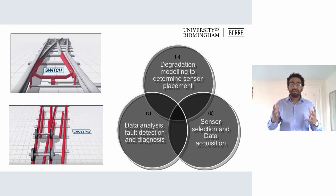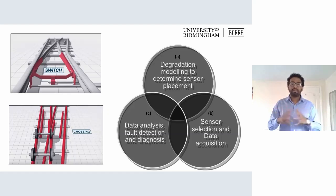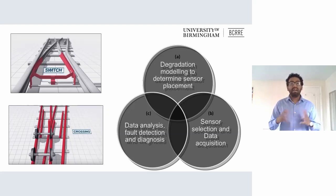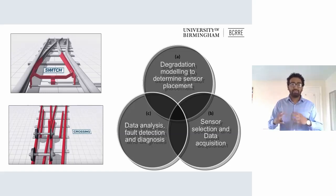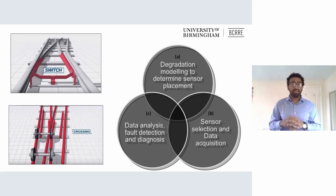Due to the level of detail considered, my switch and crossing model is also able to replicate different environmental conditions such as leaf fall season or frost on tracks. I've also validated my model by comparison against field measurements. This was done by taking outputs such as forces and accelerations from a high-speed switch and crossing in Warwick and then comparing them against my simulation outputs.